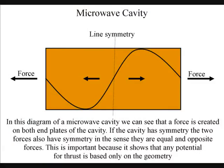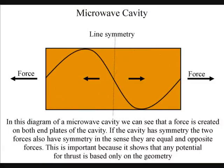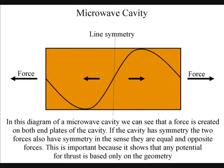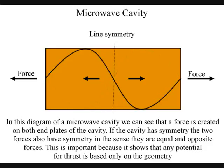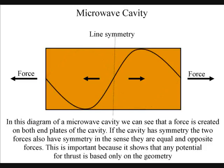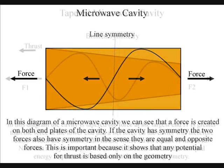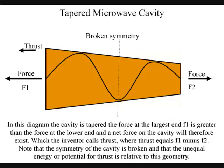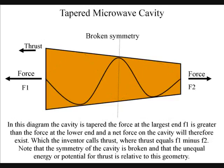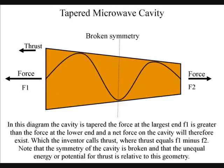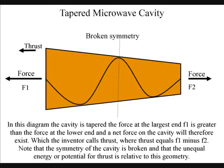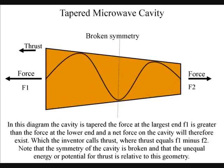In this diagram of a microwave cavity we can see that the force is created on both end plates of the cavity. If the cavity has symmetry, the two forces also have symmetry in the sense they are equal and opposite forces. This is important because the theory explained in these videos is based totally on geometry. In this diagram the cavity is tapered — the force at the large end F1 is greater than the force at the lower end, and the net force on the cavity will therefore exist, which the inventor calls thrust, where thrust equals F1 minus F2.